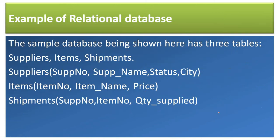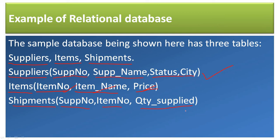Let's look at some examples of a relational database. Consider a sample database with three tables: Suppliers, Items, and Shipments. The Suppliers table has four columns: Supply Number, Supply Name, Status, and City. The Items table has three columns: Item Number, Item Name, and Price. The Shipments table has three columns: Supply Number, Item Number, and Quantity Supplied.